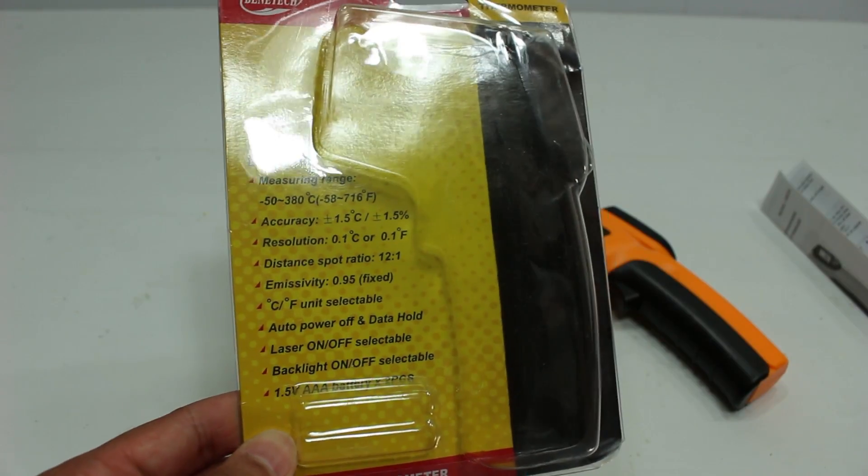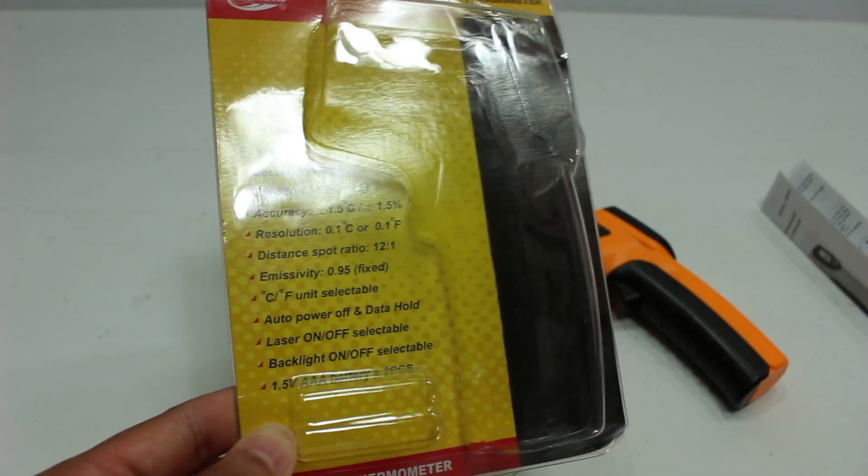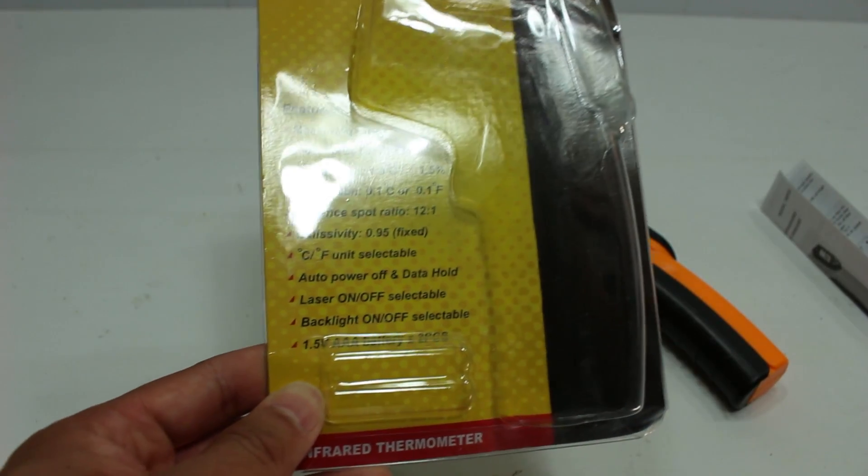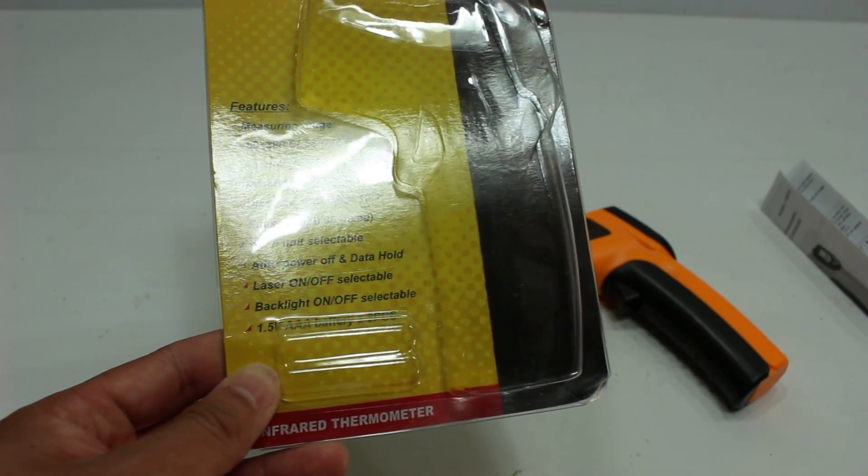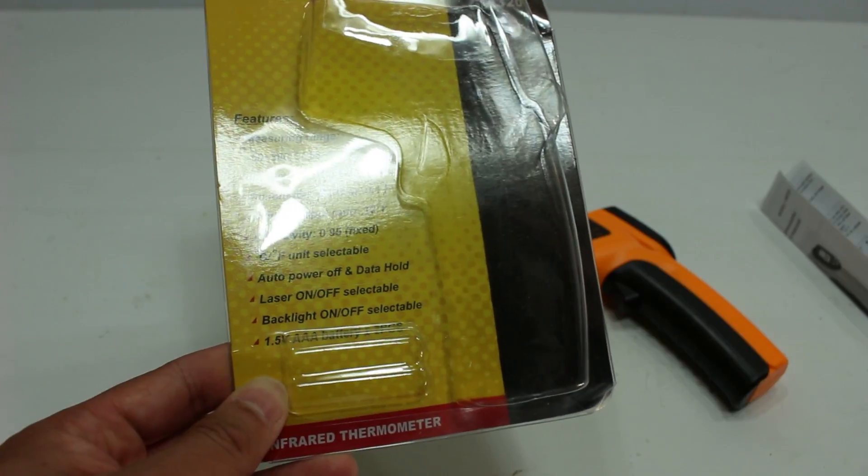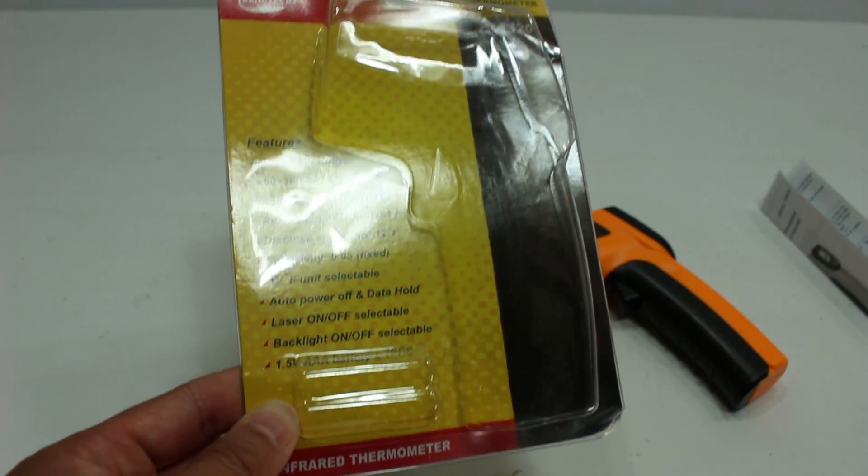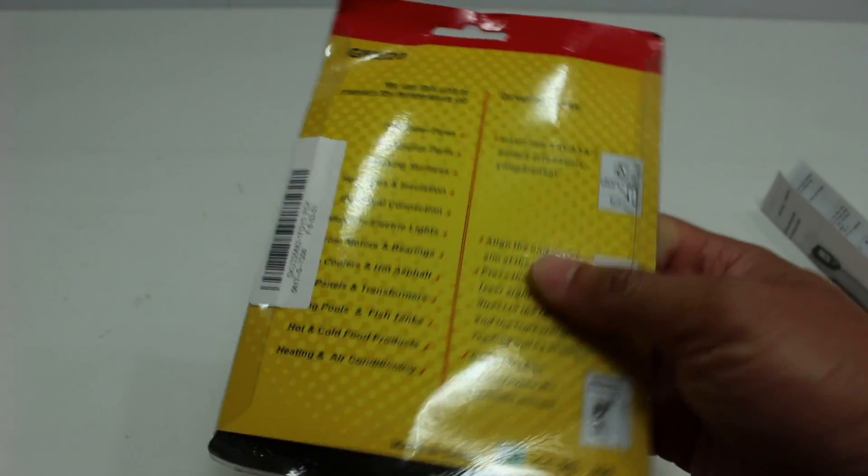I'm guessing that has something to do with the infrared. You can select from Celsius to Fahrenheit, auto power off, and you can hold the last reading. You can turn the laser on and off for seeing what spot you're actually measuring. There's a backlight and it comes with two AA batteries as well.